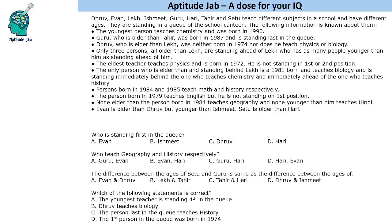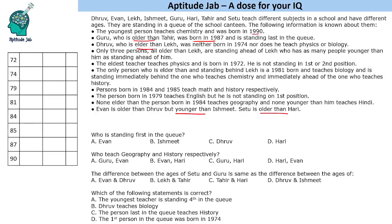Hello everyone, welcome to Aptitude Lab. This set says there are eight different people who teach different subjects in a school and have different ages. They are standing in a queue at the school canteen and some information is given about them. Glancing through the statements, most revolve around birth year — born in the year, elder than, older than, younger. The first column we must make is the year of birth, then name, subject, and position in the queue.